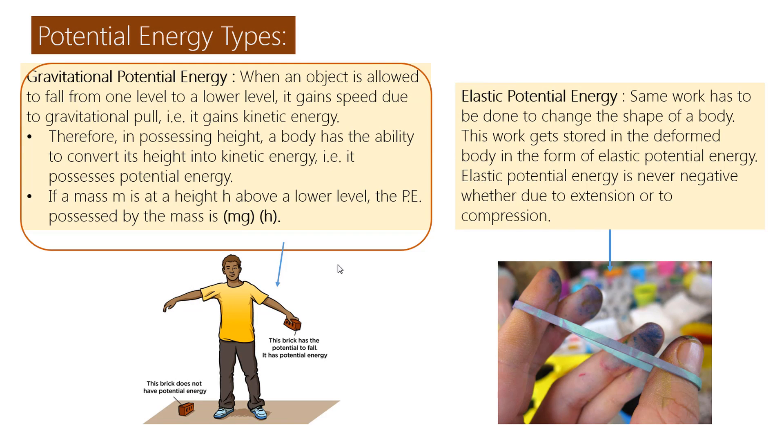Potential energy types. Gravitational potential energy: When an object is allowed to fall from one level to a lower level, it gains speed due to gravitational pull. That is, it gains kinetic energy. Therefore, in possessing height, a body has the ability to convert its height into kinetic energy.